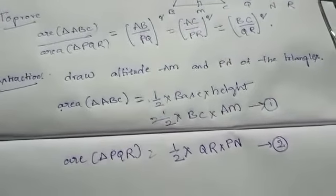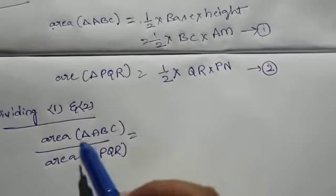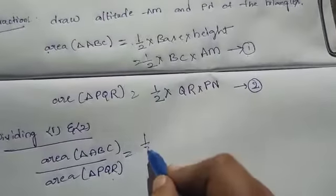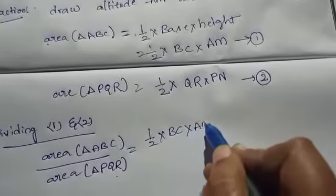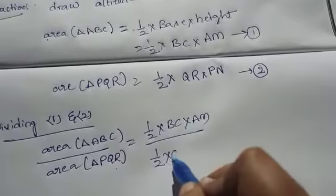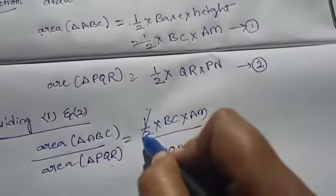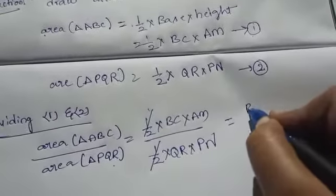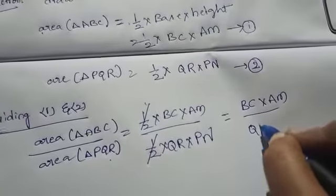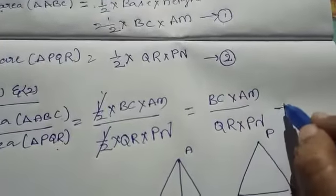Dividing equation 1 by equation 2: area of triangle ABC by area of triangle PQR equals (half into BC into AM) by (half into QR into PN). The half cancels, leaving BC into AM by QR into PN. This is equation 3.